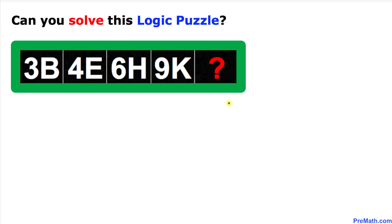Welcome to PreMath. In this video tutorial we are going to solve this given logic puzzle. Here's our combo puzzle: first is 3B, then we have 4E, 6H, 9K. Now the question mark - what combo is going to be at this spot? Can you figure out the answer on your own?